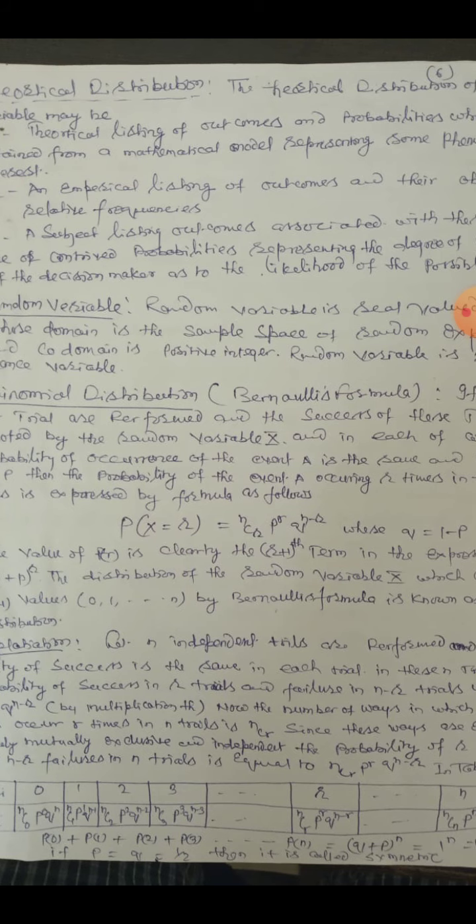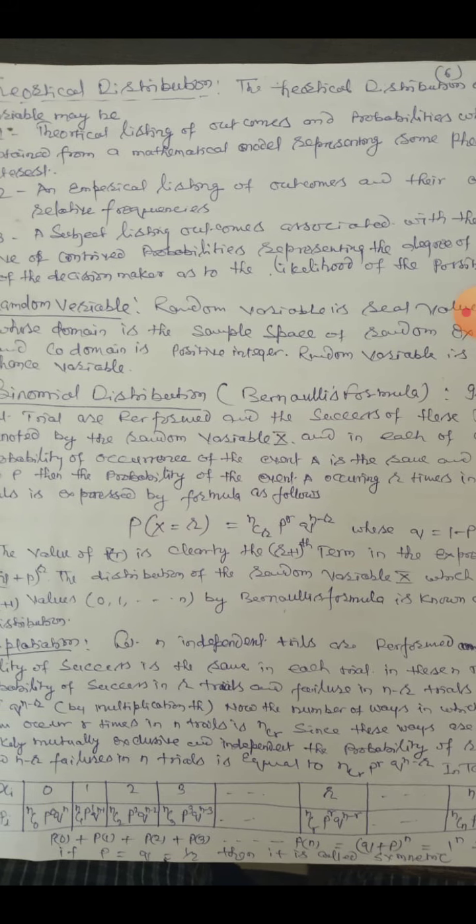In tabular form it can be written: XI and PI. So XI is equal to 0, 1, 2, 3, ..., R, ..., N.